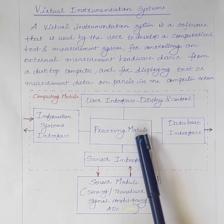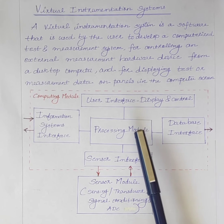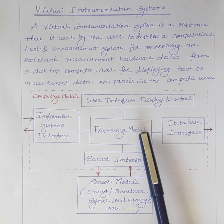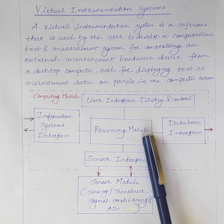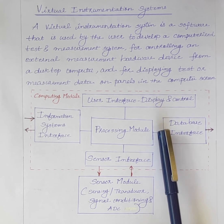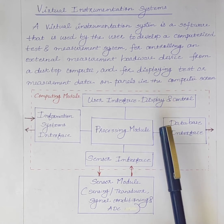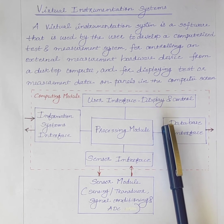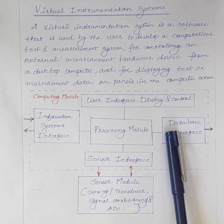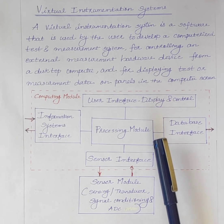In a virtual instrumentation system, software is the most important component. With the right software tool, engineers and scientists can efficiently create their own applications. Therefore, in virtual instrumentation, graphical programming techniques are used. Graphical programming languages provide a different method of coding — instead of using programming languages such as C, C++, or Java, graphical languages are coded by selecting objects, connecting them, and adding functionality. The most commonly used graphical programming language is LabVIEW.